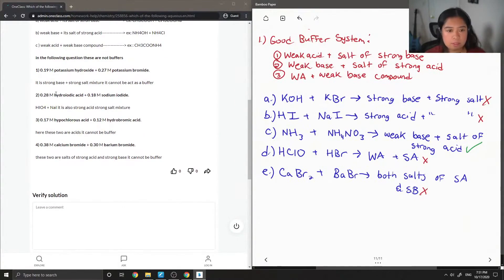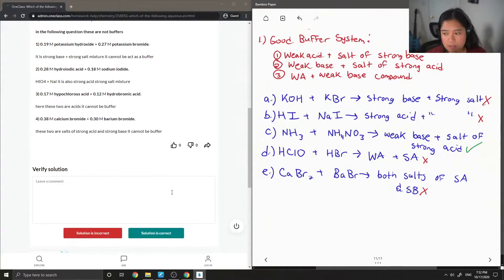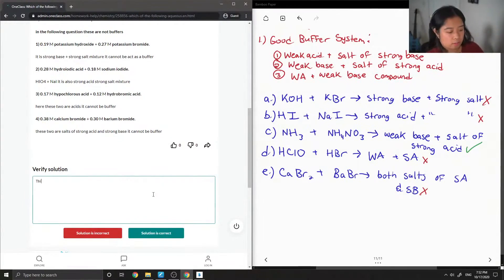For the examples, potassium hydroxide, strong base, potassium bromide, strong salt mixture cannot act as a buffer. Hydroiodic acid and sodium iodide, strong acid, strong salt mixture. Hypochlorous acid, hydrobromic acid, here these two are acids, it cannot be a buffer. And lastly, calcium bromide and barium bromide, these two are salts of strong acid and strong base. In this case, it cannot be a buffer. So this solution is correct.